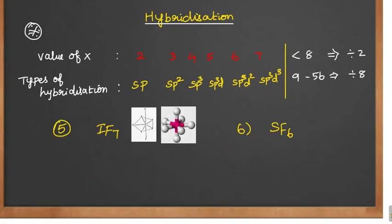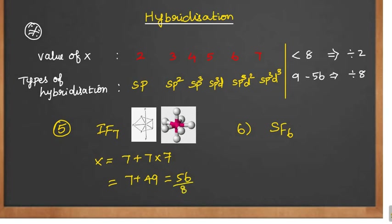Next one is IF₇. Both iodine and fluorine come under the halogen group, so both have 7 as the outermost electron. So x value: 7 plus 7 into 7 = 7 plus 49 = 56. Dividing by 8, since 7×8 is 56, x value is 7, which means sp3d3 hybridization.